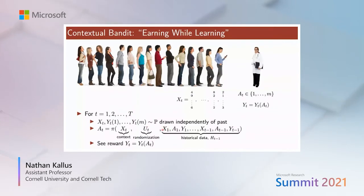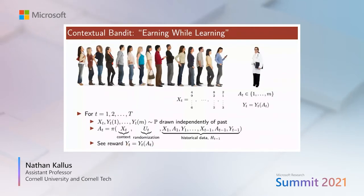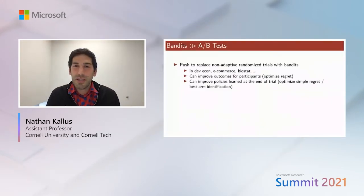The policy also depends on all historical data so far — context, action, and outcome from that action up to time t — which I'll call h of t minus 1. This represents all the data we have so far, from which we can learn about the unknown distribution. After taking an action, we get to see the reward yt corresponding to that action. There are bandit algorithms that try to optimize cumulative rewards or the policy learned at the end, both offering improvements over non-adaptive randomized trials.